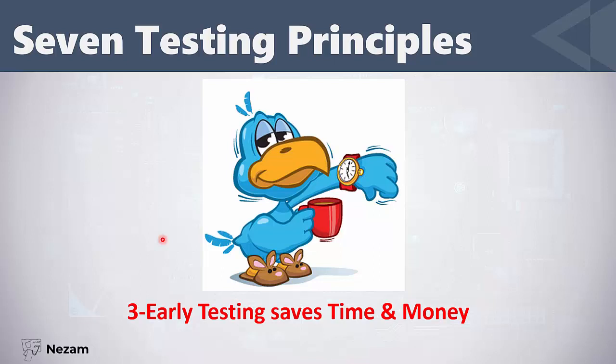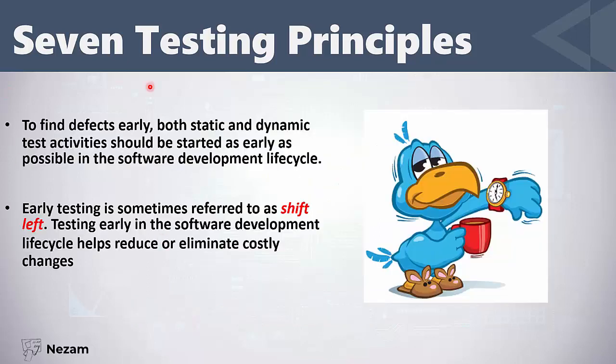The third principle is: early testing saves time and money. The best thing in software testing is to begin testing as early as possible. To find defects early, you should perform static and dynamic testing as early as possible — static testing from the moment the requirements are written, and dynamic testing beginning from writing the code and performing unit testing.